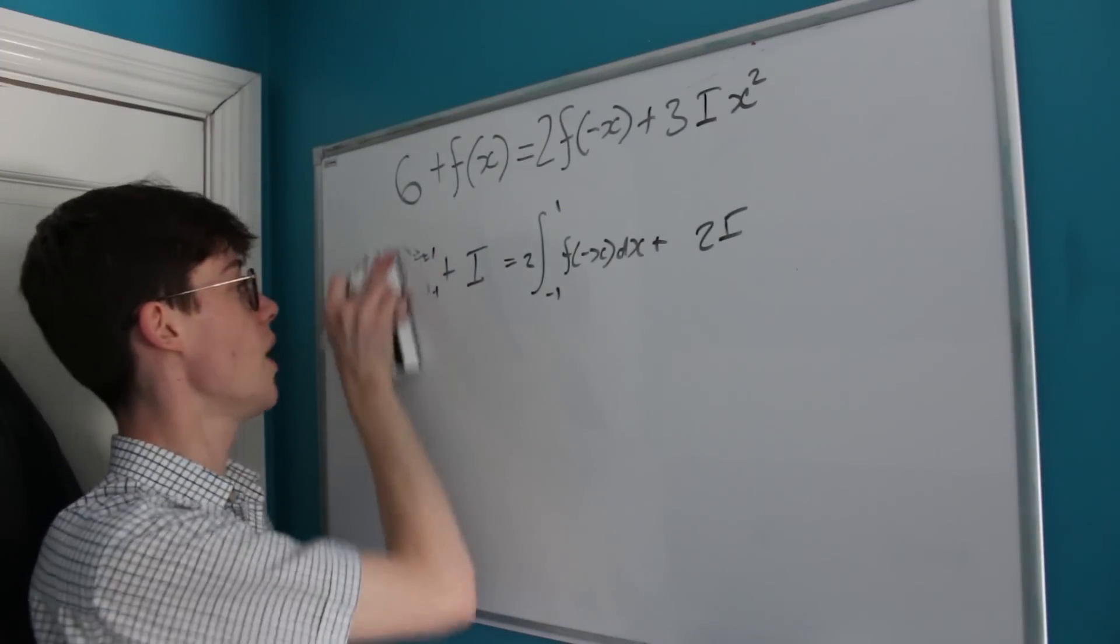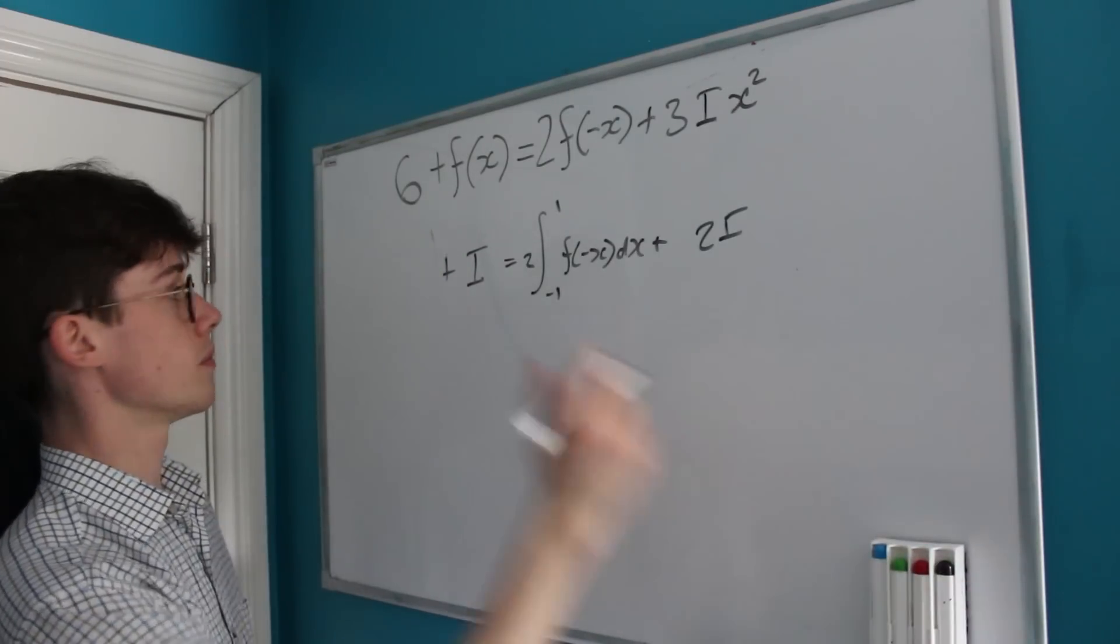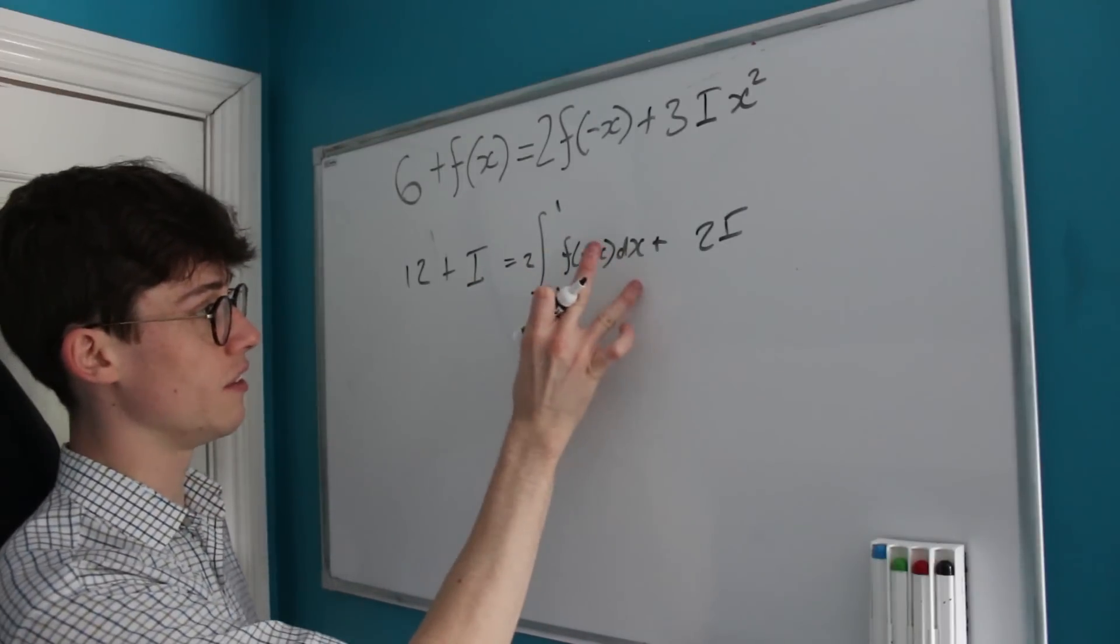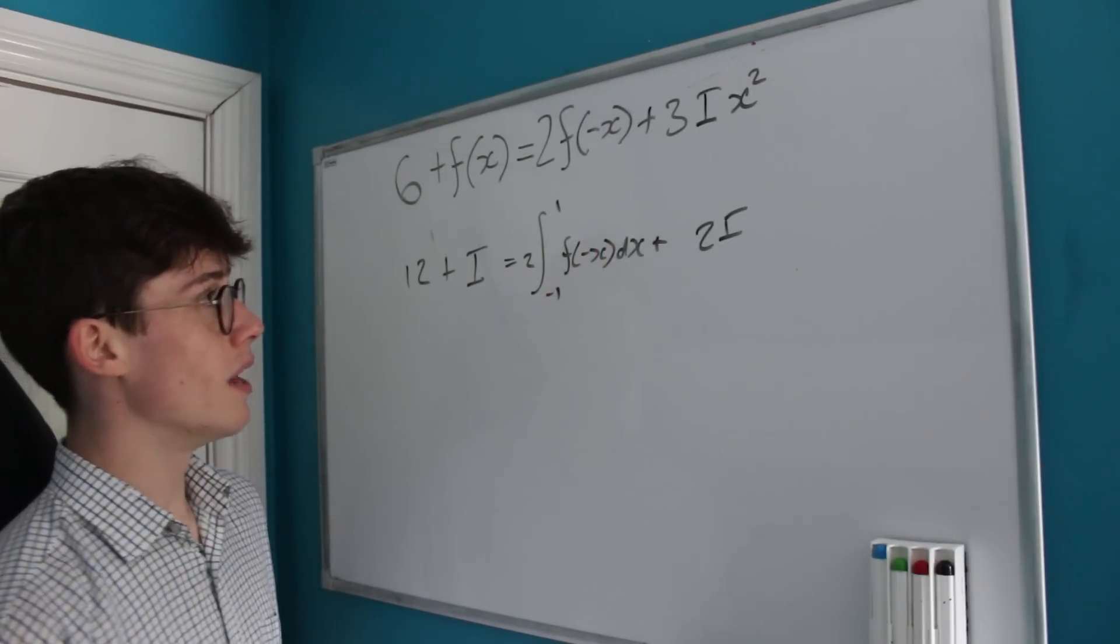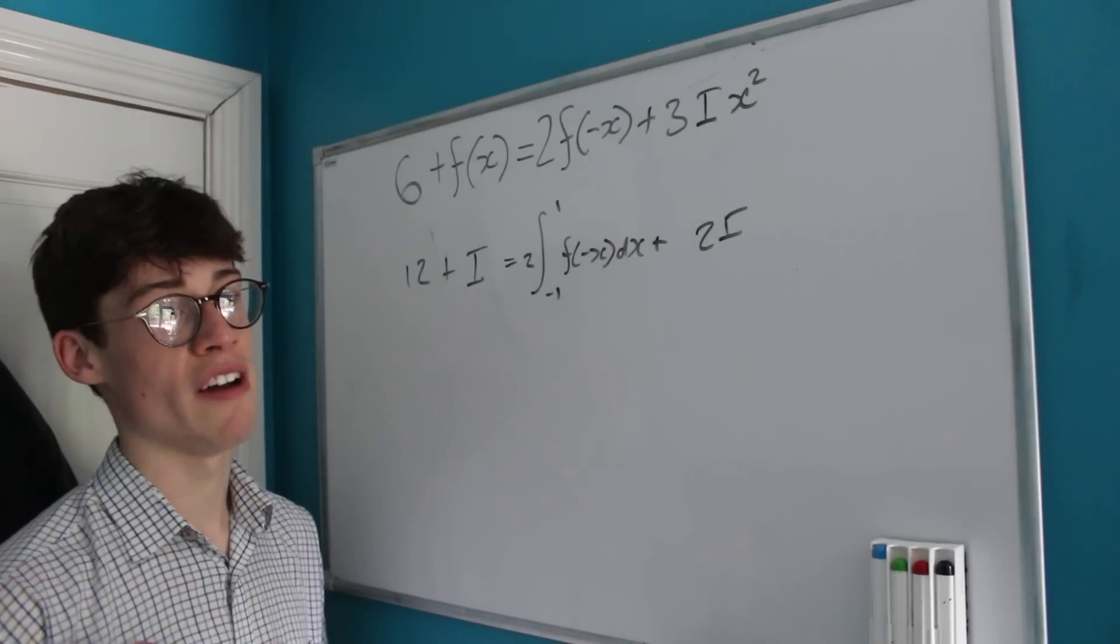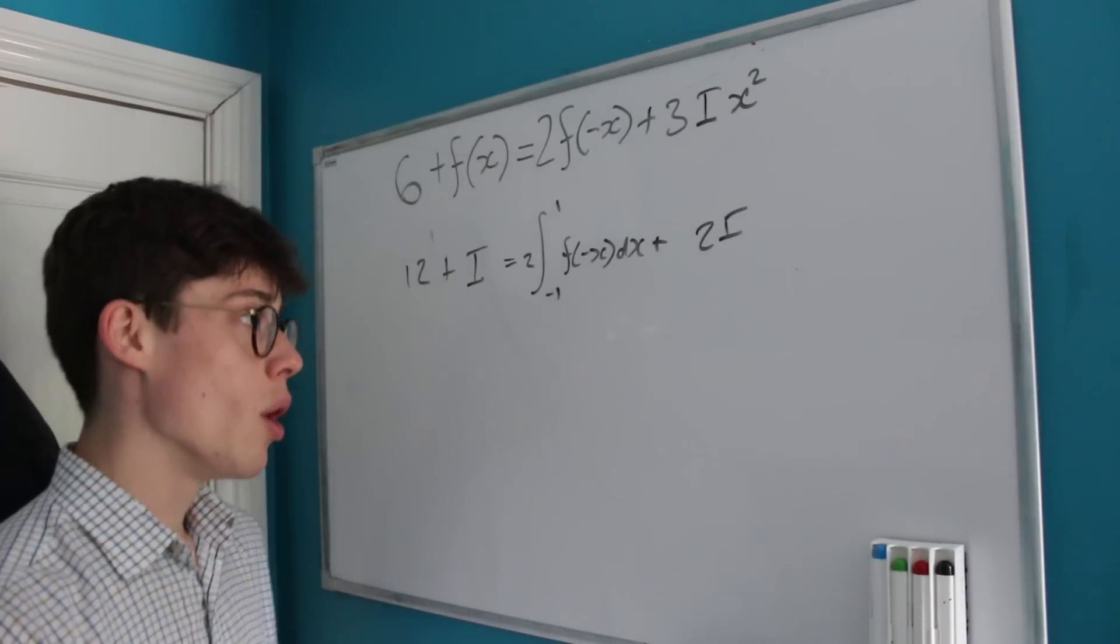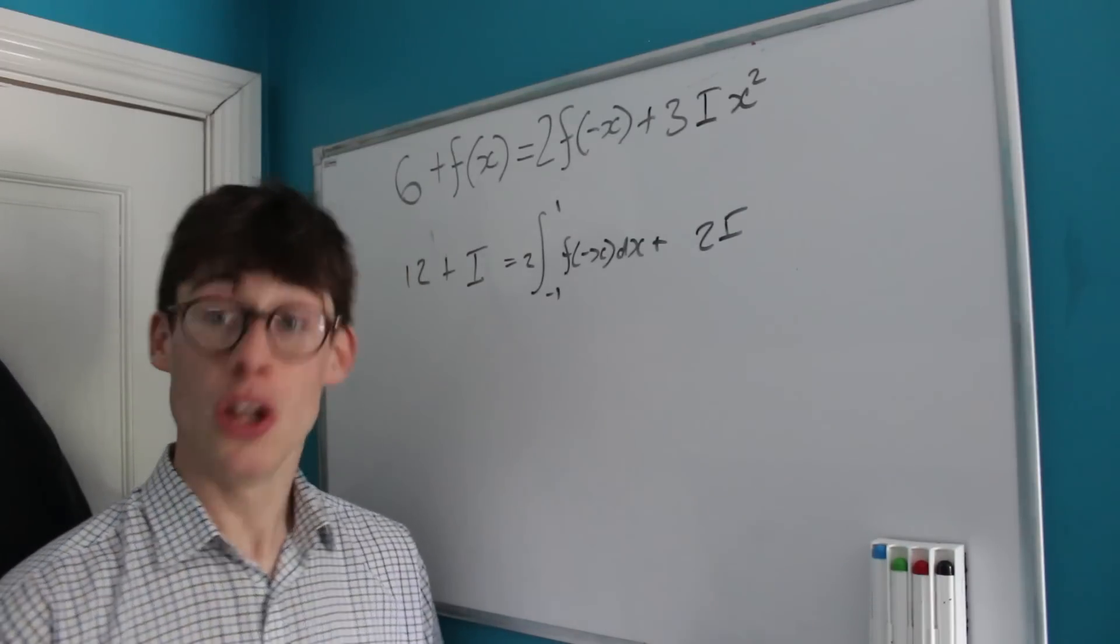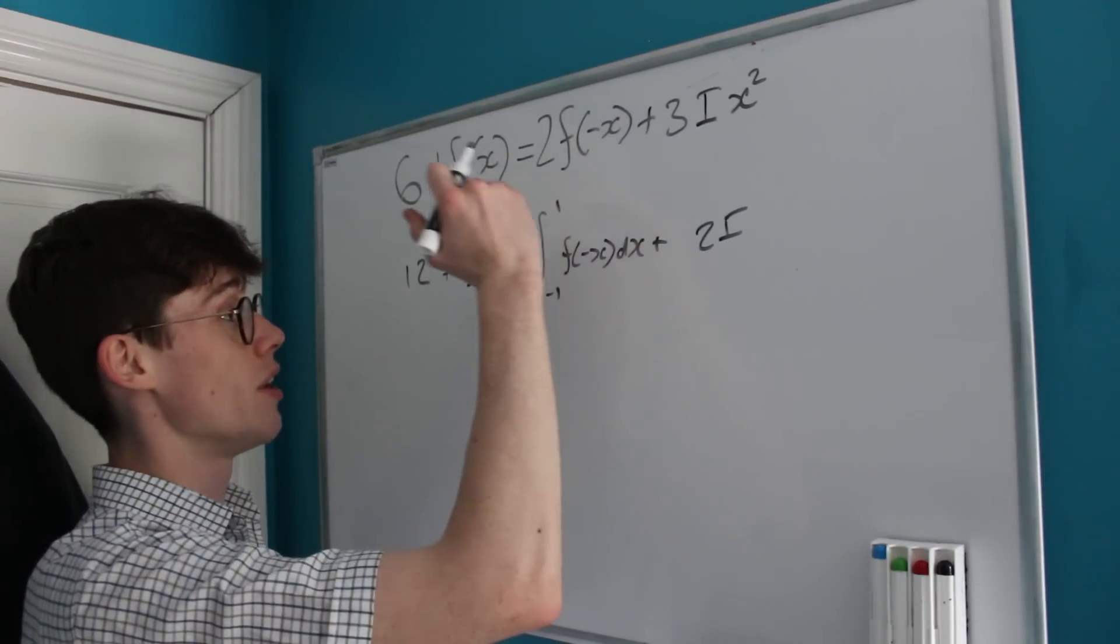All we've got to consider now is this last integral here. We don't know much about the integral from -1 to 1 of f(-x)dx, but we do know that we've called I the thing that we're looking for, which is the integral from -1 to 1 of f(x)dx.